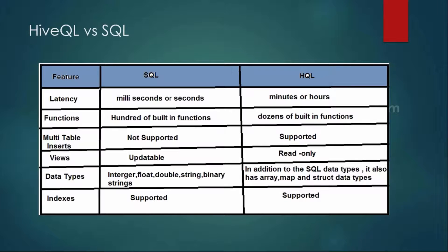In Hive we use the specialized language called Hive Query Language, HQL. The difference between standard SQL and HQL: in terms of latency, SQL returns results in milliseconds or seconds, but HQL can take minutes or even hours for huge datasets. In terms of data size, SQL is limited to terabytes, whereas HQL can handle terabytes, petabytes, and exabytes.